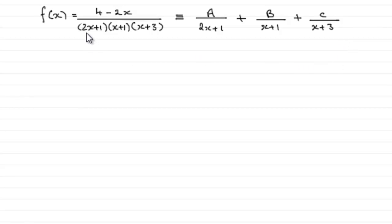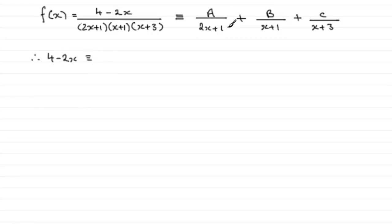What we do is multiply both sides by the denominator: (2x+1)(x+1)(x+3). Multiplying this side gives us 4 minus 2x. When we multiply the first term A/(2x+1) by that denominator, the (2x+1) cancels out and we're left with A times (x+1)(x+3).